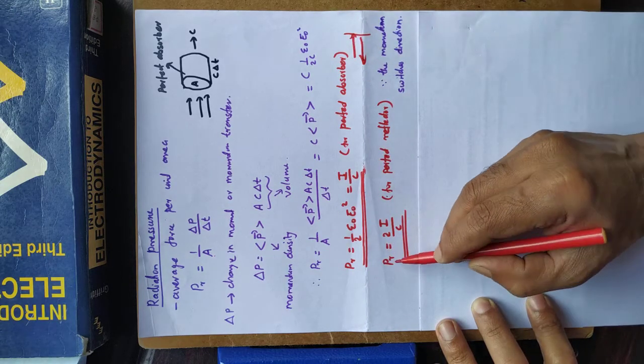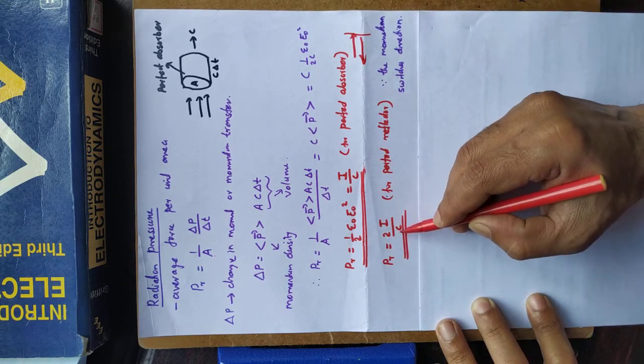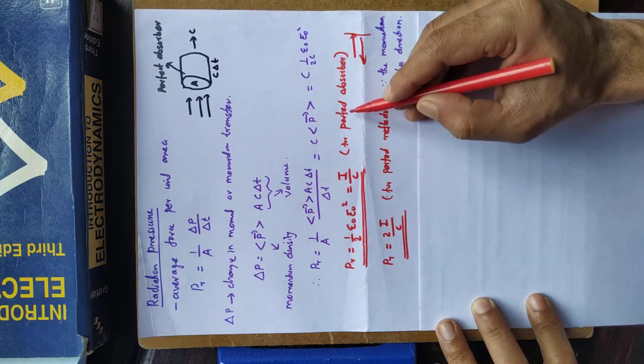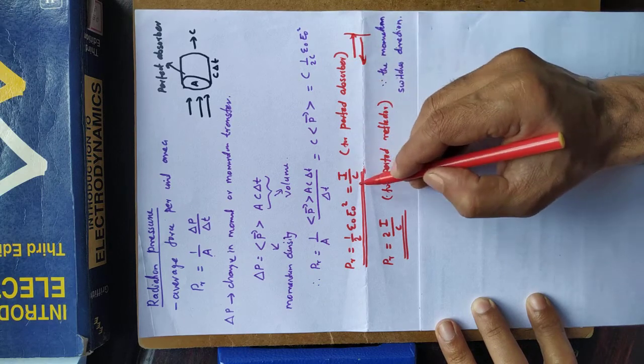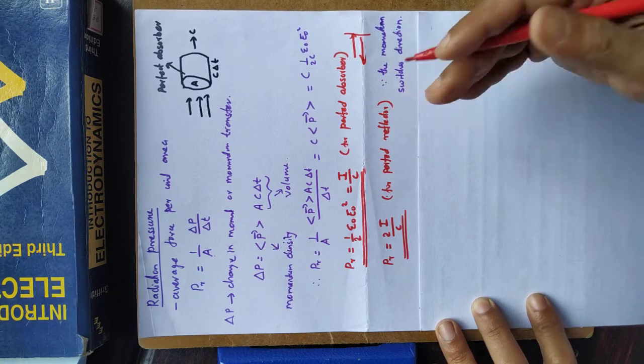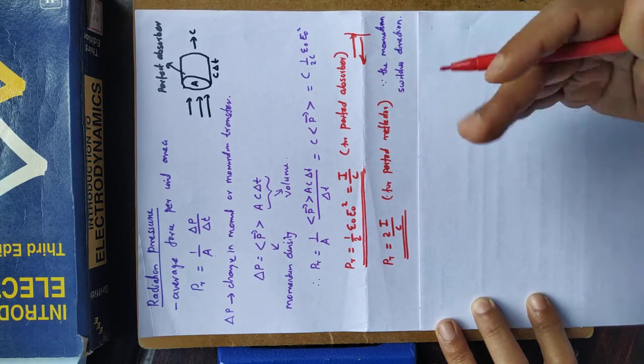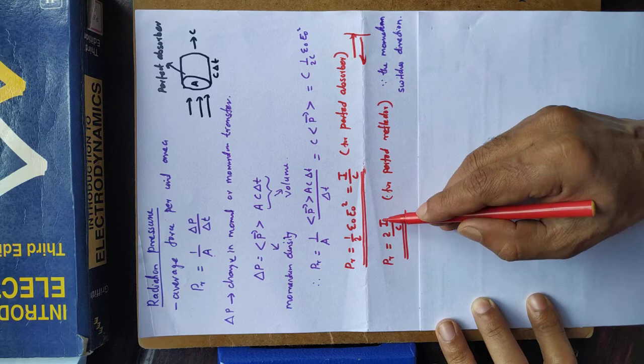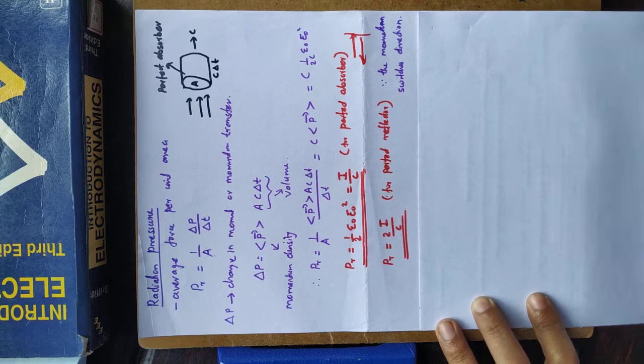So, pressure is two times I over C. For a perfect absorber, radiation pressure is I/C. For a perfect reflector, like a perfect mirror, radiation pressure will be 2I/C.